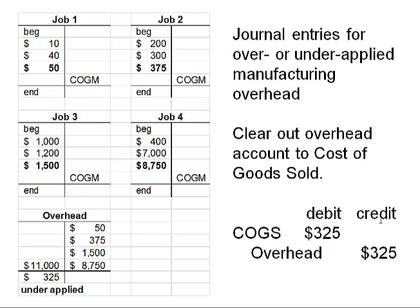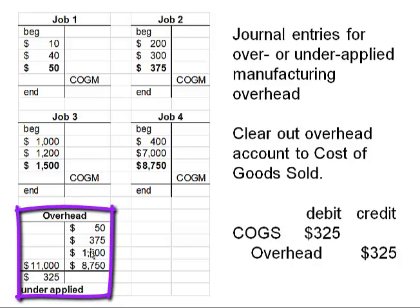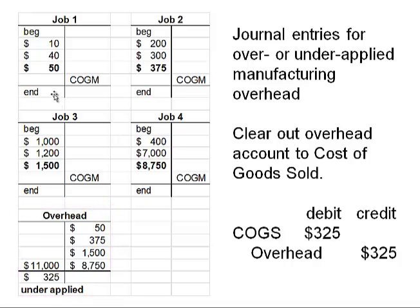We would have a separate account where we keep track of actual overhead, which was $11,000. The applied overheads went to each of the four jobs. What we applied was not enough, leaving us with a dangling debit in the overhead account. You would clear that out by crediting overhead and debiting cost of goods sold. When you have under-applied, not enough went into work in process, therefore not enough is in finished goods, therefore not enough flowed through to cost of goods sold. By adjusting the overhead and putting it in cost of goods sold, you are increasing cost of goods sold to compensate for the under-applied amount.